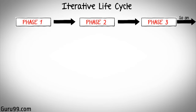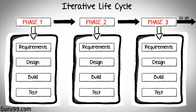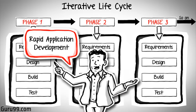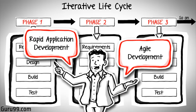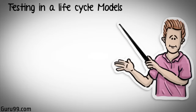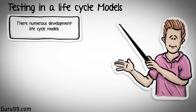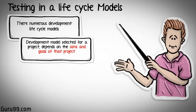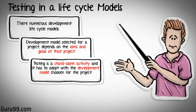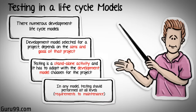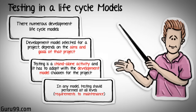Apart from the V model, there are iterative development models, where development is carried out in phases, with each phase adding a functionality to the software. Each phase comprises of its own independent set of development and testing activities. Good examples of development lifecycles following the iterative method are Rapid Application Development and Agile Development. You must note that there are numerous development lifecycle models, and the model selected depends on the aims and goals of that project. Testing is not a standalone activity and must adapt to the development model chosen. In any model, testing should be performed at all levels, right from requirements gathering all the way up to maintenance.